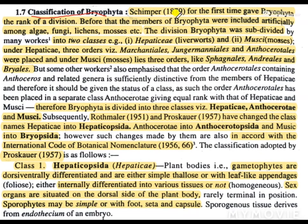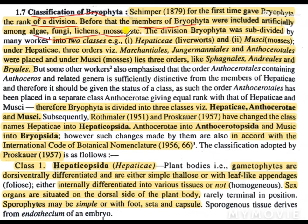Skimper in 1879, for the first time, gave bryophyta the rank of a division. So Skimper was the person who first gave bryophyta the rank of a division. Remember this. And before that, the members of bryophyta were included artificially among algae, fungi, lichens, mosses, etc.